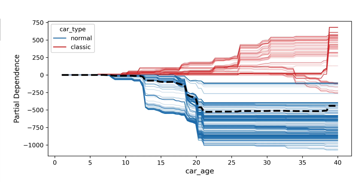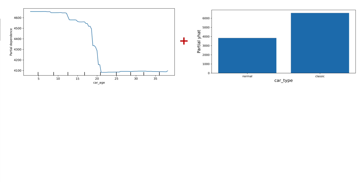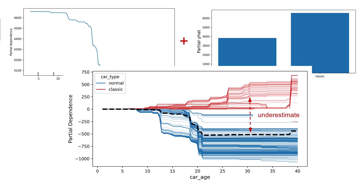However, the ICE plot clearly shows that there is an interaction between the two features. For classic cars, the effect of car age on the predicted price is different than for normal cars. So if we simply added the values from the car age PDP to the PDP value for classic cars, we would underestimate the effect of age for these cars — the PDPs are not additive. We compare the observed joint PDP to the joint PDP under the assumption that there's no interaction, and we can extend this to analyze interactions between a feature and all other features.